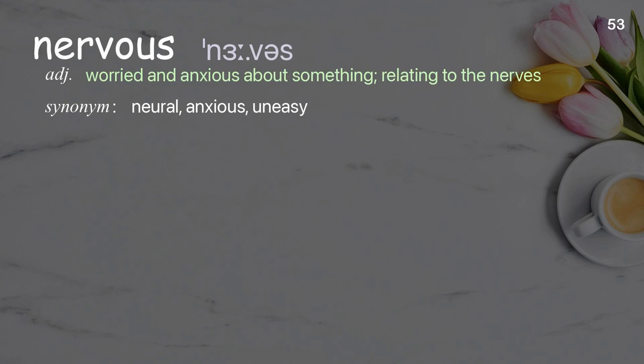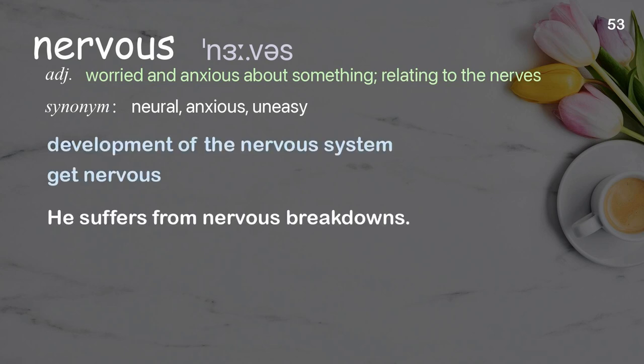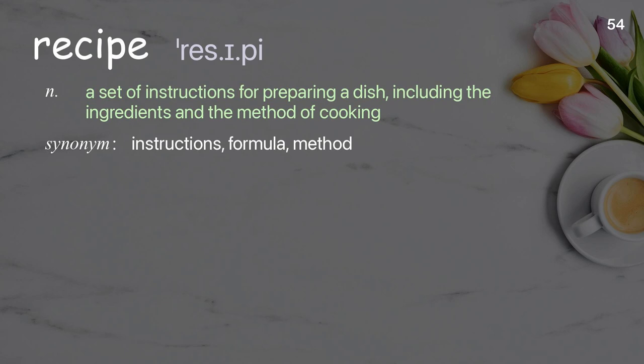Nervous: worried and anxious about something; relating to the nerves. Examples: development of the nervous system, get nervous. He suffers from nervous breakdowns.